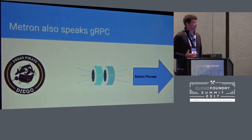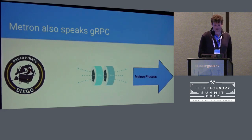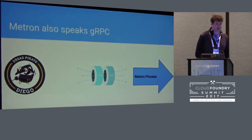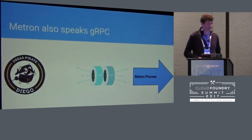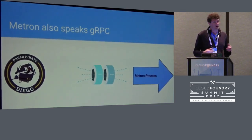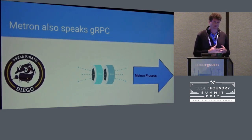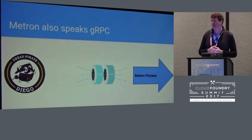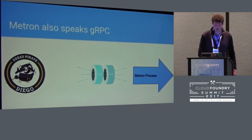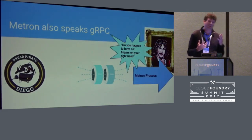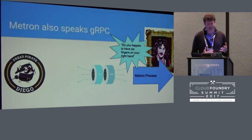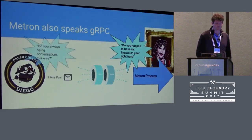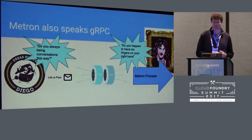Metron also speaks gRPC. This is still experimental but we're really close to trying this out on our production environment. This will actually provide secure transport all the way from the Diego cell into the process — already secure in Linux, but in a Windows container there's still some UDP. It will also improve message reliability in that one last place where we still have UDP.